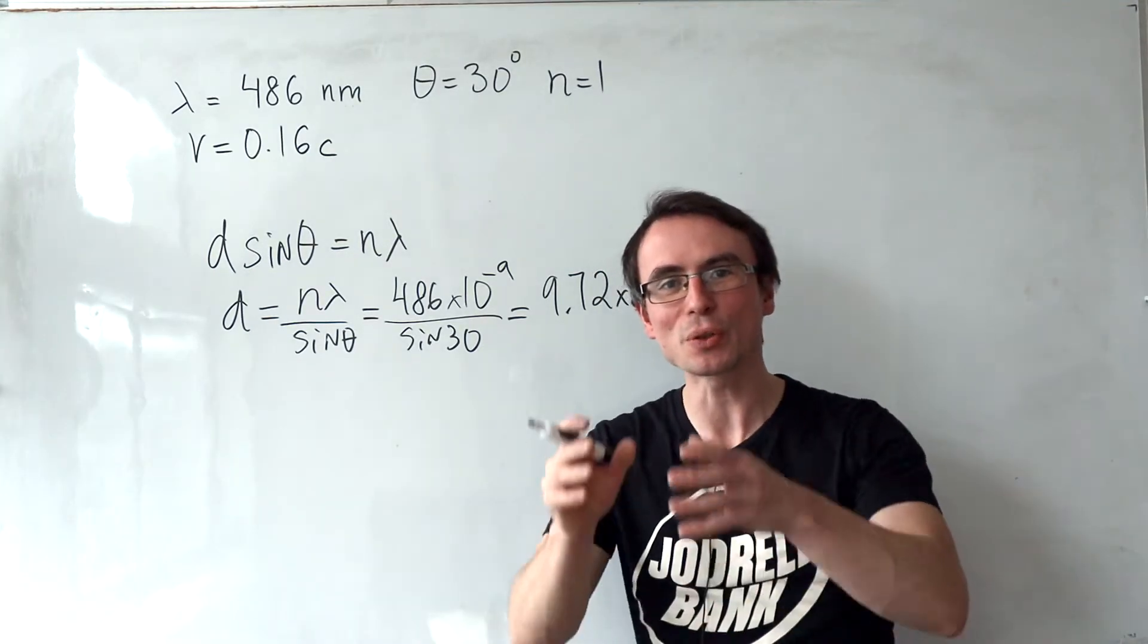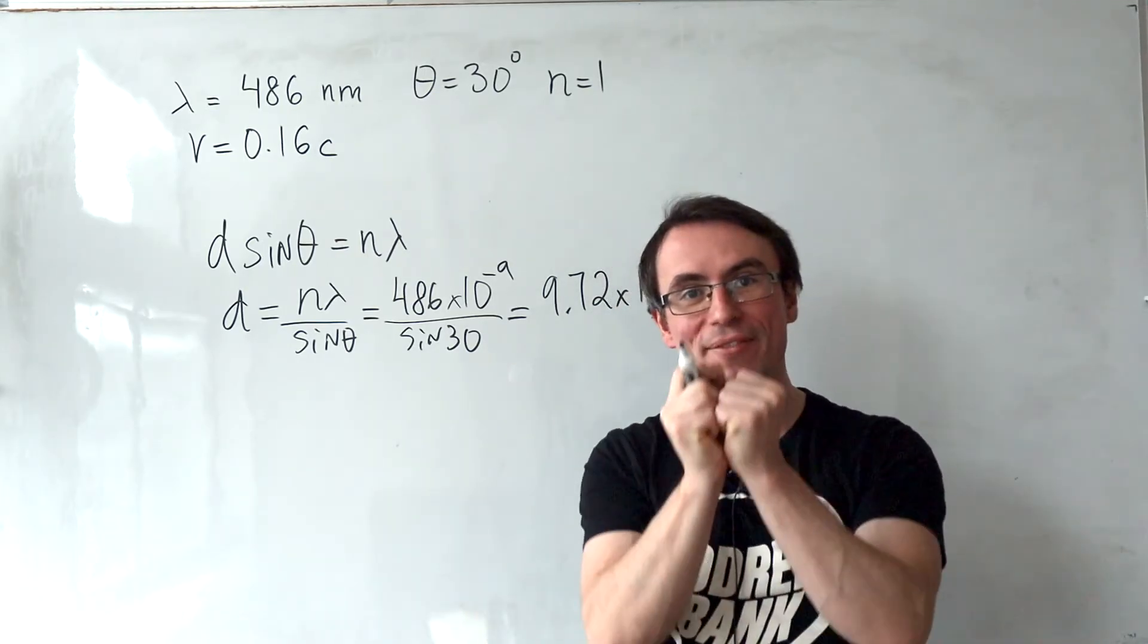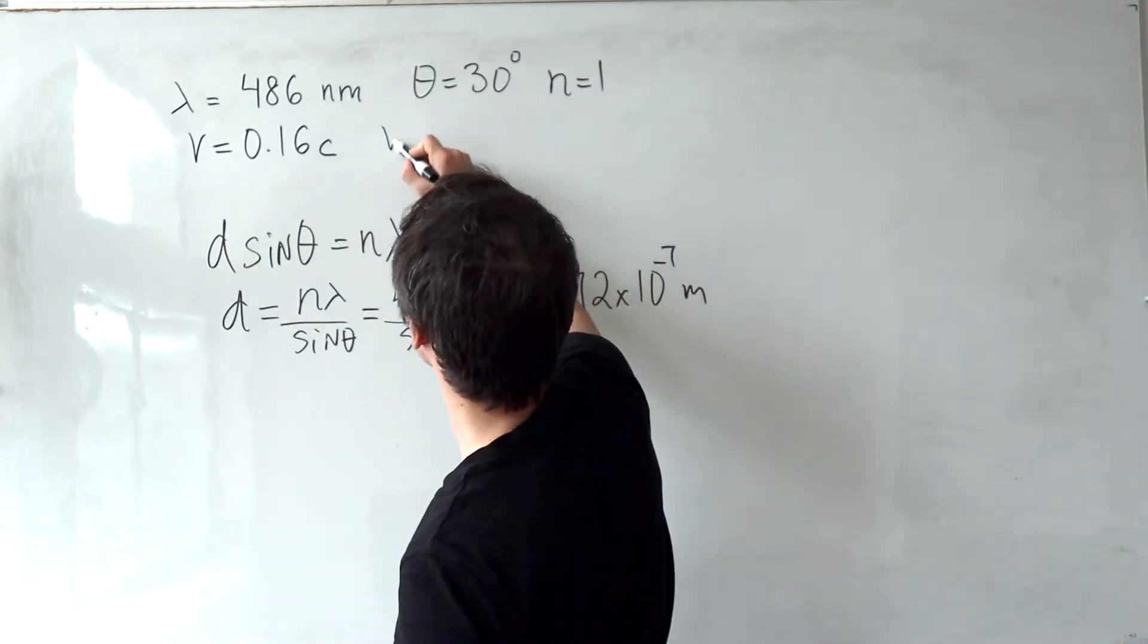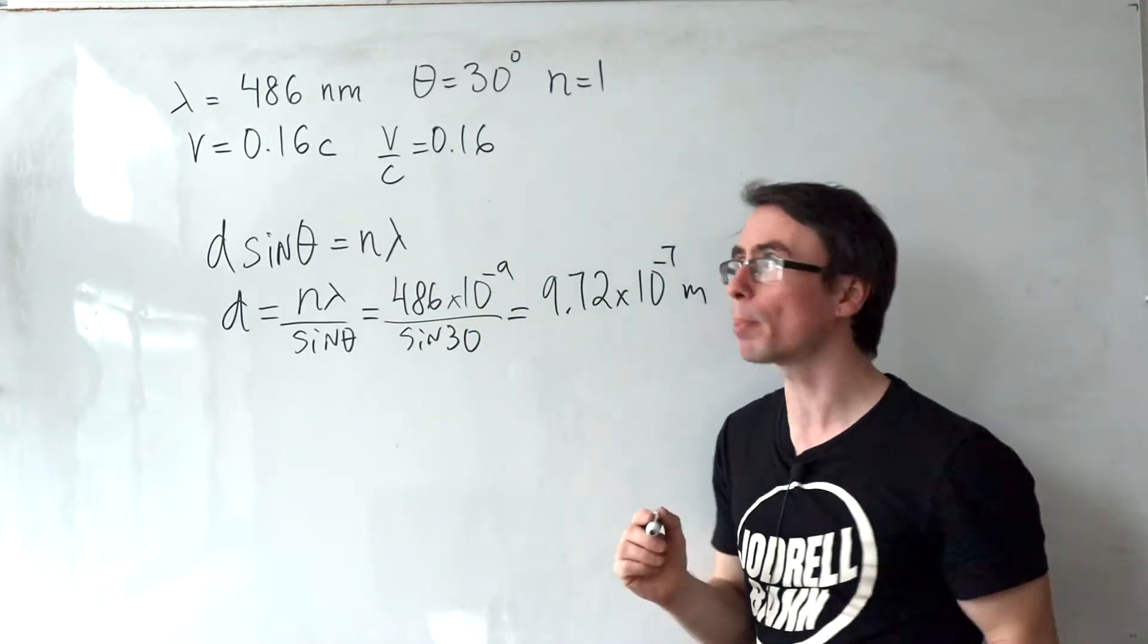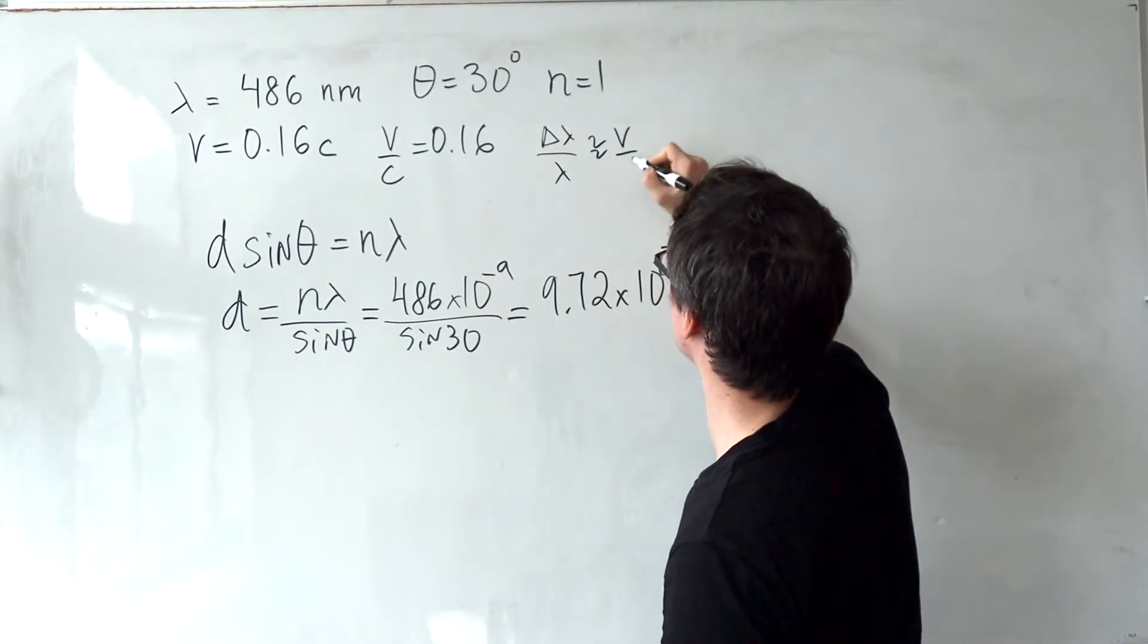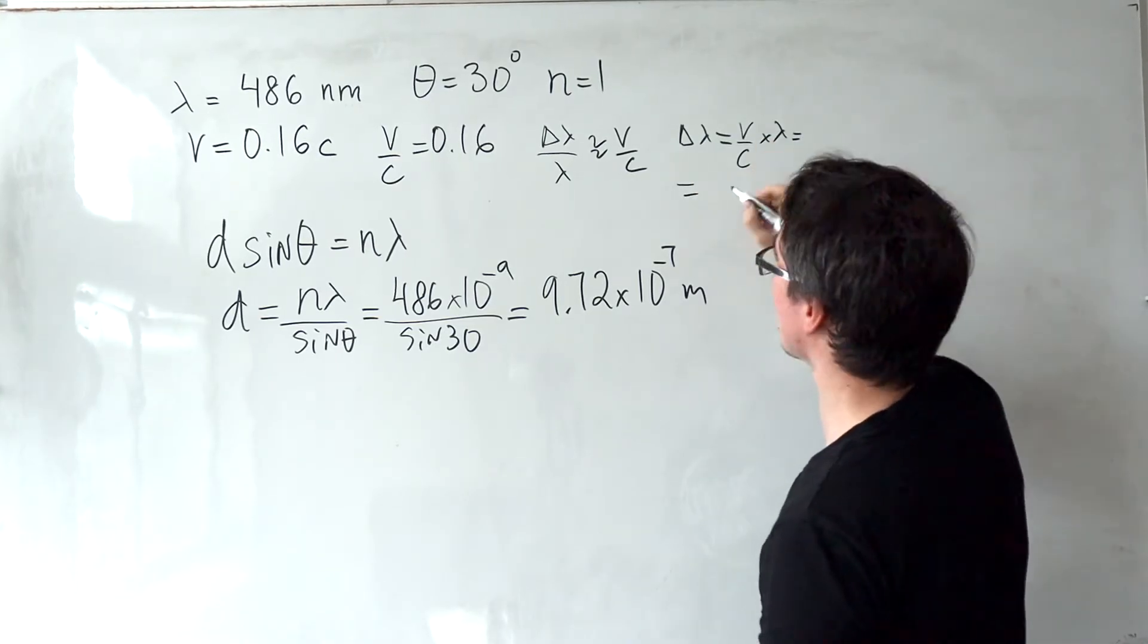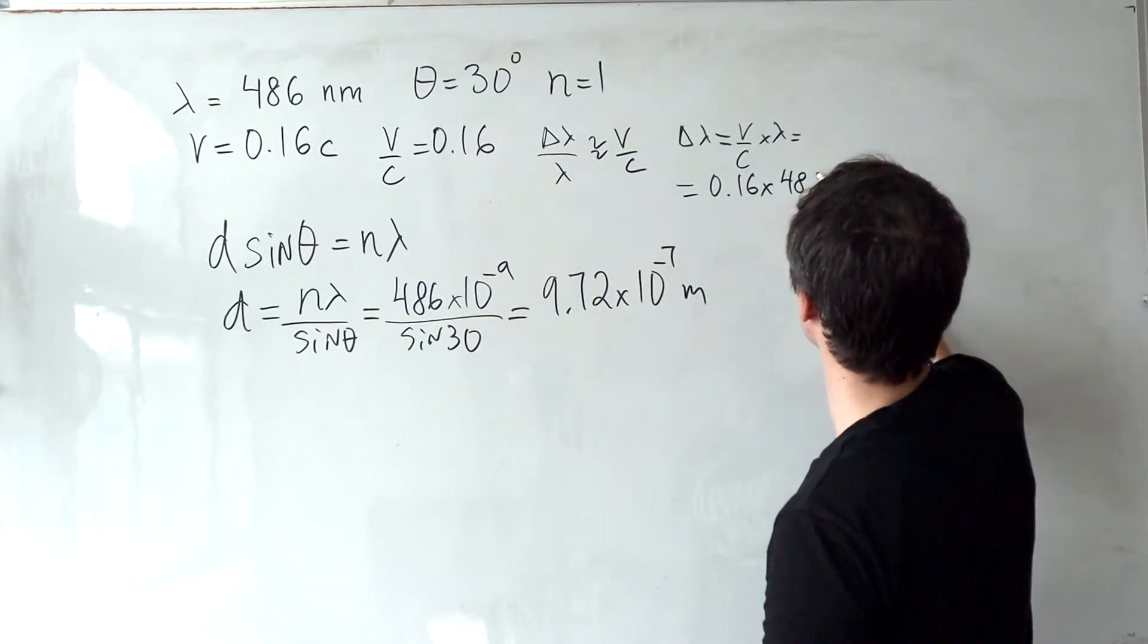Our next step in this question is to consider the fact that we repeat the same experiment, but now with wavelength that has been stretched from a star that's actually receding at 0.16 of the speed of light. Because this is true, we also know that V/C will be 0.16. And then we can immediately use Doppler's effect, which says that delta lambda over lambda is about equal to V over C. That means that the change in wavelength will be equal to V over C times the original wavelength.